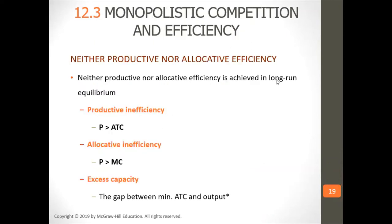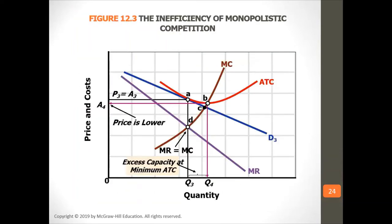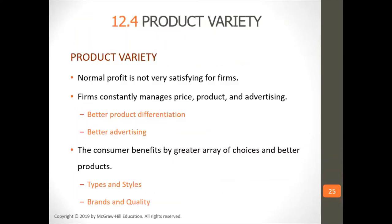Productive inefficiency means price is greater than average total cost. Allocative inefficiency means price is greater than marginal cost. Excess capacity is the gap to the minimum average total cost. Since normal profit is not very satisfying for firms, they constantly manage price, product, and advertising to achieve better product differentiation and better advertising. The consumer benefits from a greater array of choices, better products, and more types and styles.